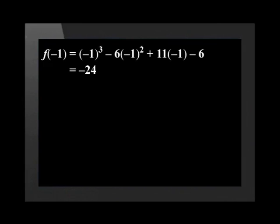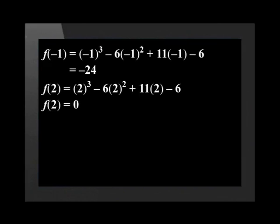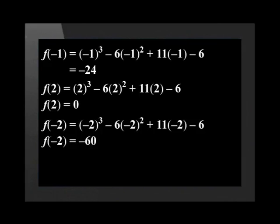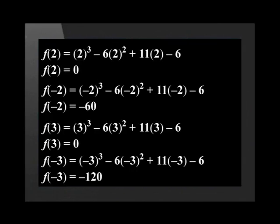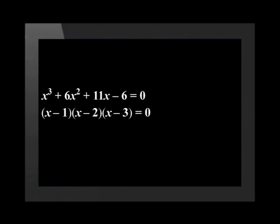Now let's find the other two using the same method. f(−1) is equal to negative 24. f(2) is equal to 0. f(−2) is equal to negative 60. f(3) is equal to 0. f(−3) is equal to negative 120. Therefore, (x minus 1)(x minus 2)(x minus 3) is equal to 0.